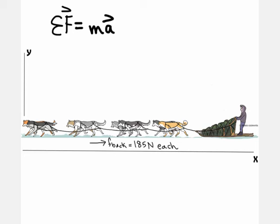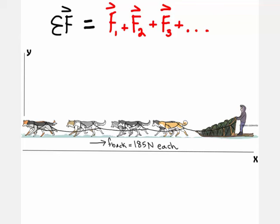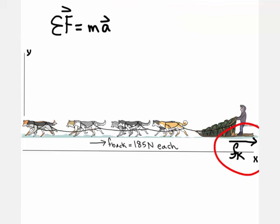Since we have forces, let's use Newton's second law. This means the sum of all forces equals the mass of the object and its acceleration.